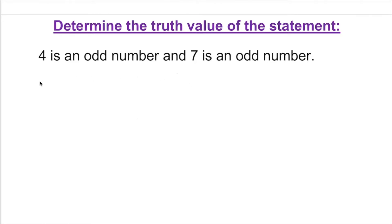So let me introduce something here. Let p: 4 is an odd number. That's simple, just like that. And q: 7 is an odd number. Well, the question is, what is the validity of those?